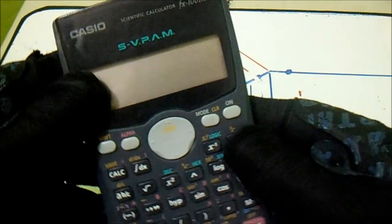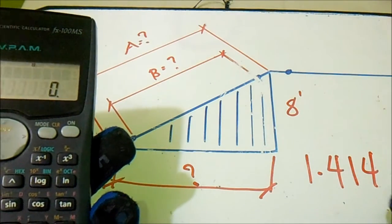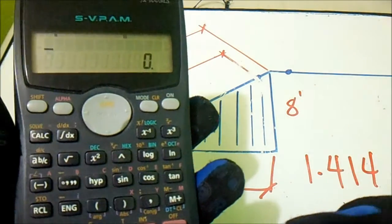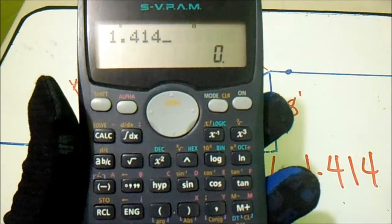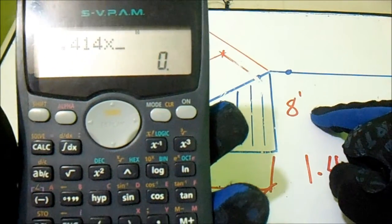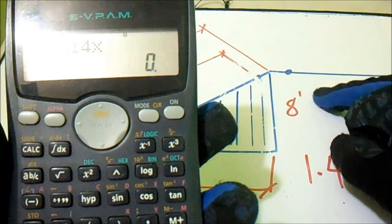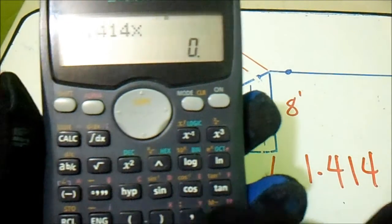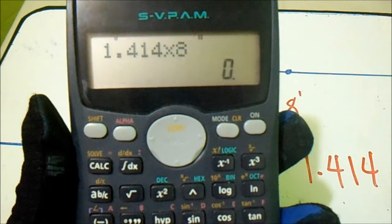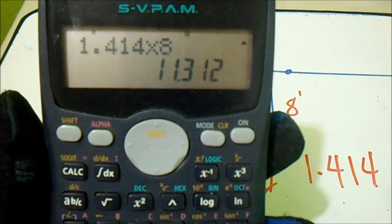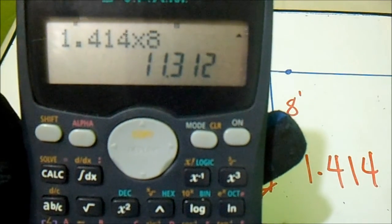We will compute letter A. 1.414 multiplied by 8 feet equals, so our answer for A is 11.312. 11.312.